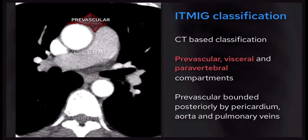ITMIG, the International Thymic Malignancy Interest Group, developed a well-used classification system naming the compartments prevascular, visceral, and paravertebral, which are now more relevant to CT imaging. The prevascular compartment is bounded laterally by the parietal pleura and the internal thoracic vessels, anteriorly by the sternum, and posteriorly by the pericardium, ascending aorta, and aortic arch. It contains fat, lymph nodes, and the thymus.